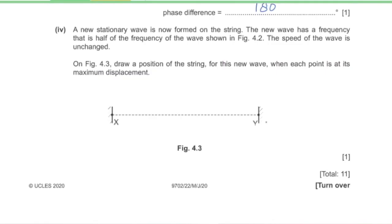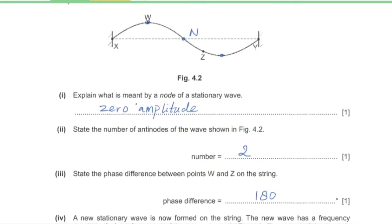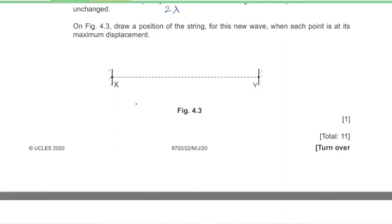Part 4: a new stationary wave is formed with half the frequency, meaning double the wavelength. Speed is unchanged. On figure 4.3, draw the string at maximum displacement. The previous wave was one complete wave; now we have half a wavelength, with one antinode in the middle of X and Y and nodes at each end.